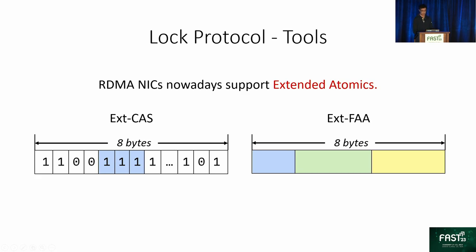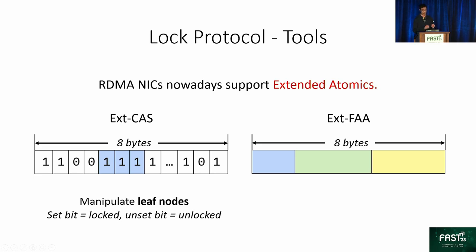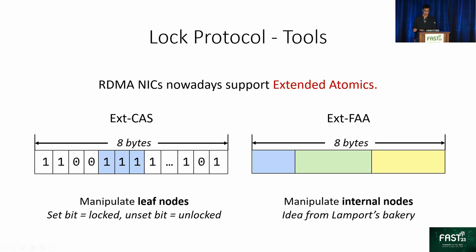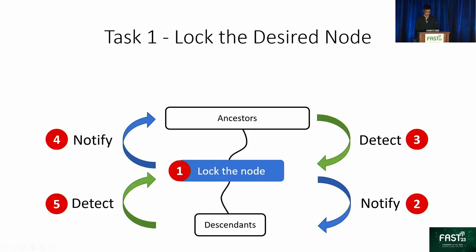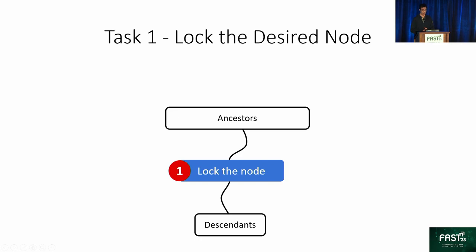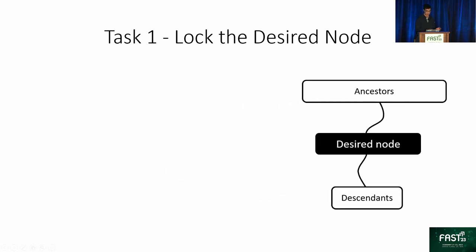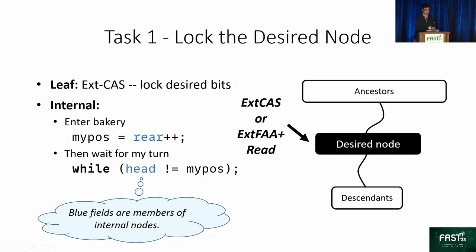Powered by extended atomics, we design a format for nodes in the segment tree. We use compare-and-swap to manipulate leaf nodes, which are bitmaps where each bit represents the lock state of the corresponding storage unit. We use fetch-and-add to manipulate internal nodes, which are split into multiple fields to maintain virtual lock queues, similar to Lamport's bakery algorithm. For Task 1 — locking the desired node itself — the method depends on the node's position. If the node is a leaf, we use extended compare-and-swap to set the corresponding bits. If internal, we enter the virtual queue by incrementing a field called rear, and wait by polling head until it matches the rear value we got, meaning we are first in the queue.